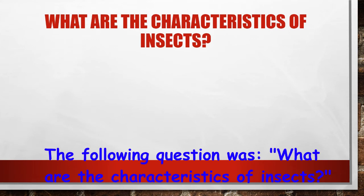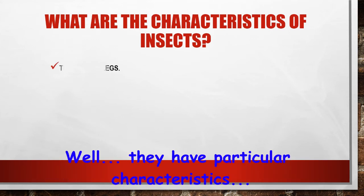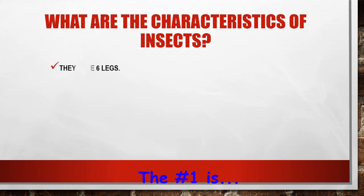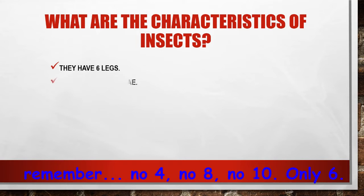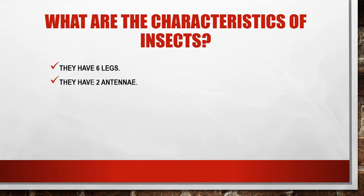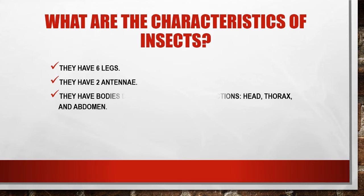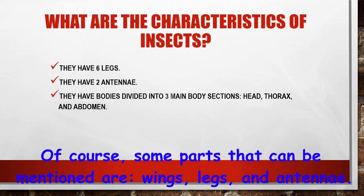The following question was: what are the characteristics of insects? They have particular characteristics. Number one: they have six legs — not four, not eight, not ten, only six. Number two: they have two antennae. Number three: they have bodies divided into three main sections — head, thorax, and abdomen.